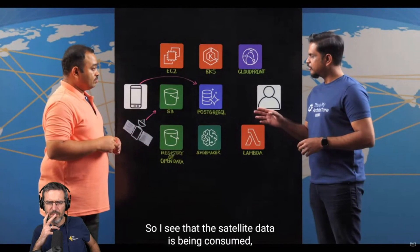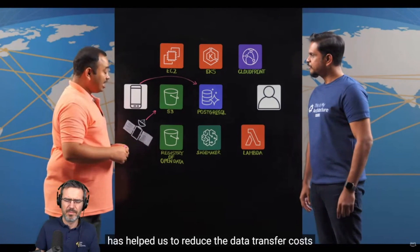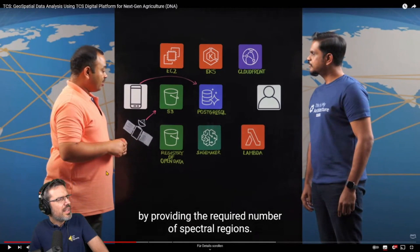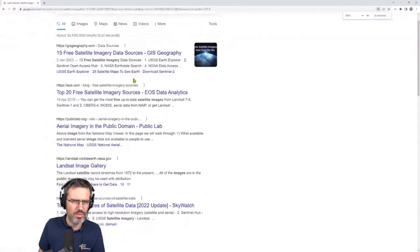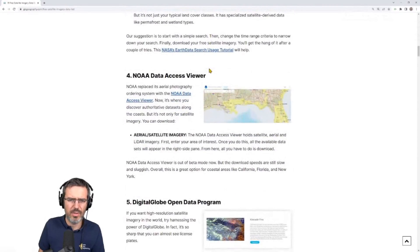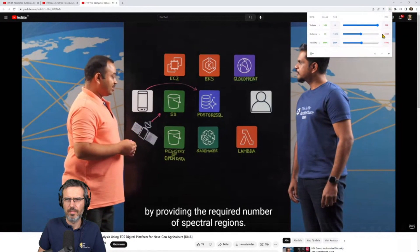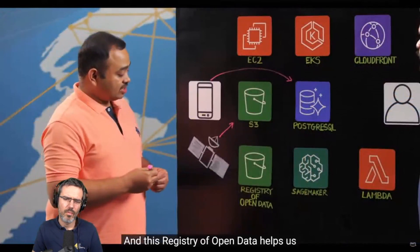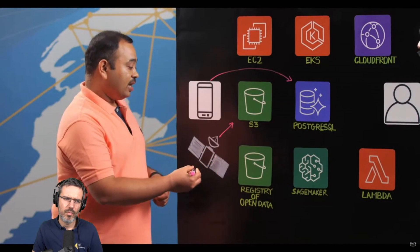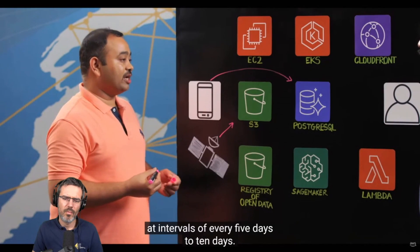I see satellite data is being consumed, but you're also leveraging the Registry of Open Data on AWS. Why exactly is that? The Registry of Open Data on AWS has helped us reduce data transfer costs by providing only the required number of spectral regions. The satellite generally has 13 spectral regions, but we use only four in our processing. This has reduced our data size from 60 terabytes to 20 terabytes, and we process this data at an interval of every five to ten days.